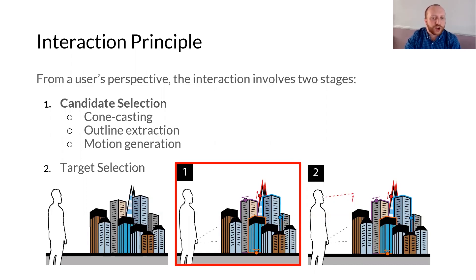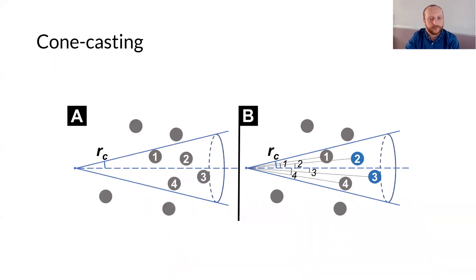Candidate targets are selected using a cone casting technique. This stage is designed to encourage coarse-grained, lazy pointing, which can be performed with any type of pointing modality. By limiting the number of candidates for selection, we reduce visual clutter and increase the robustness of selection using smooth pursuits.